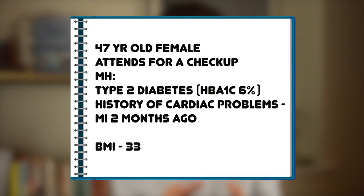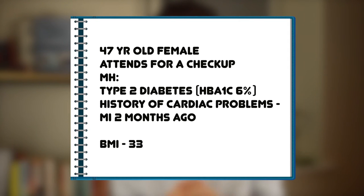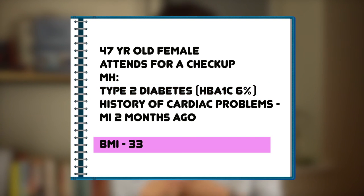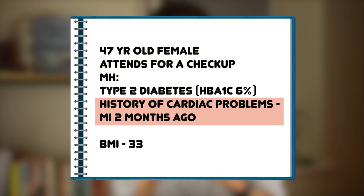Our second example is a 47-year-old female who attends for a check-up. She has a medical background of diabetes and heart problems, and tells you she had a heart attack two months ago. Her BMI is 33 and her HbA1c is 6%. The well-controlled diabetes and BMI of 33 would both place her in ASA 2, however the key factor here is that she had a myocardial infarction two months ago, which immediately puts her into an ASA 4 category — severe disease that is a constant threat to life.